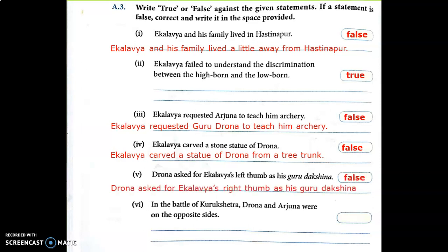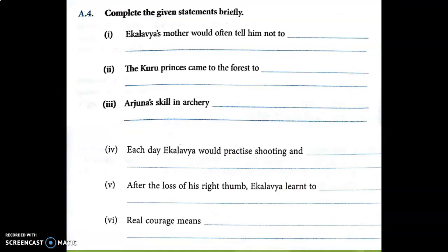Statement five: Drona asked for Eklavya's left thumb as his Guru Dakshina. Left thumb? No, it's false. Correction: Drona asked for Eklavya's right thumb as his Guru Dakshina. Statement six: In the battle of Kurukshetra, Drona and Arjuna were on the opposite side. Yes, it's true, so we will not change it.